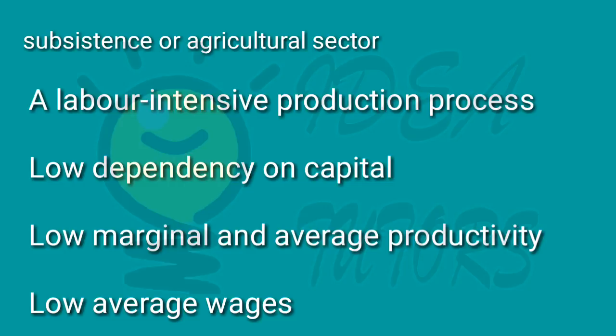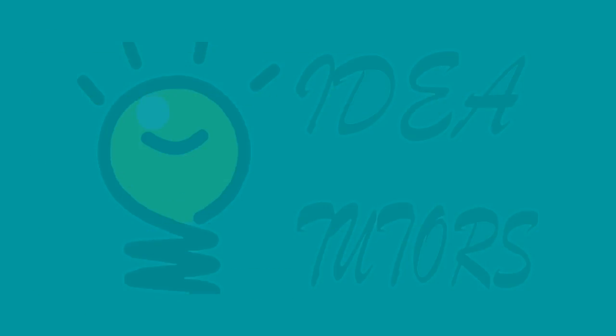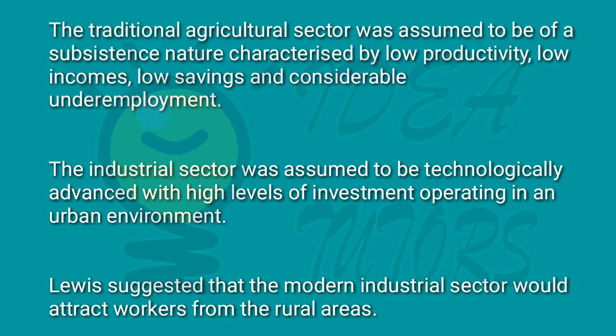Contrasting this, there is also a subsistence or agricultural sector, involving a labor-intensive production process, low dependency on capital, low marginal and average productivity, and low average wages. This traditional agricultural sector was assumed to be of a subsistence nature, characterized by low productivity, low incomes, low savings, and considerable underemployment. The industrial sector was assumed to be technologically advanced with high levels of investment, operating in an urban environment.